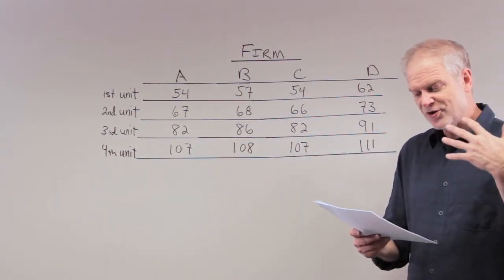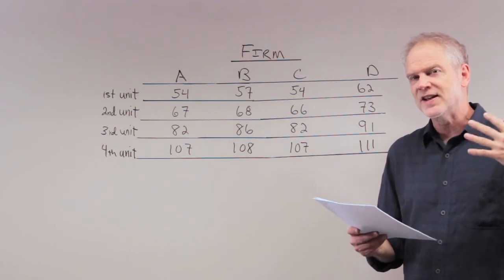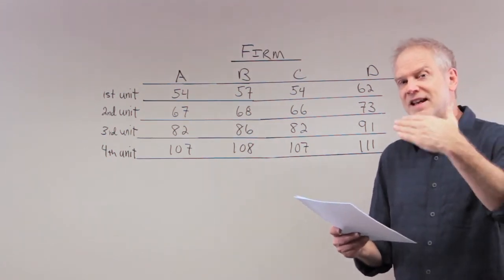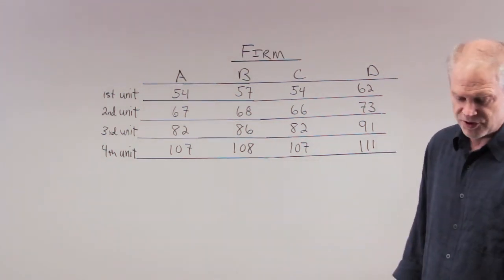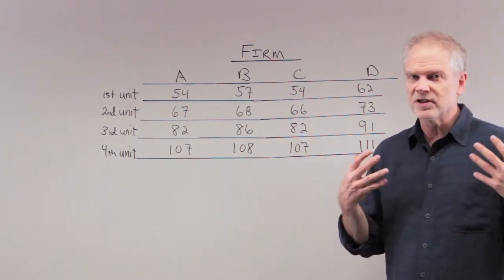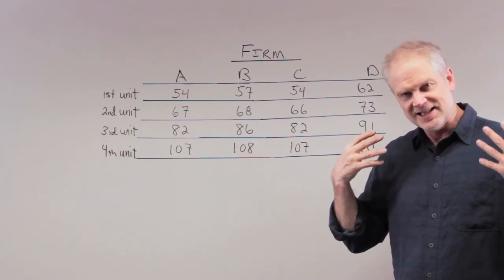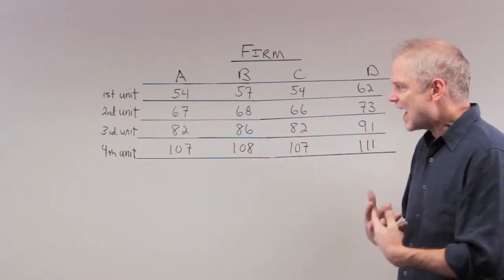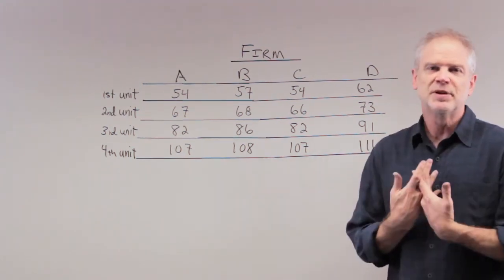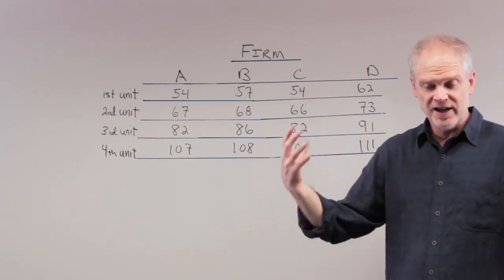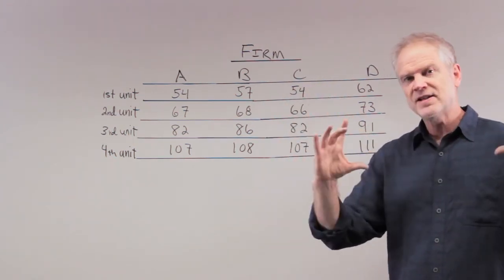But it does show you how firms respond to the incentive that the government gives them by setting a price on pollution. And that's really a trick. We can solve a lot of global warming issues. We can make great progress on them if we can just basically tax ourselves. If we can tax the production of pollution, that negative externality, remember a class we called it a Pigovian tax?